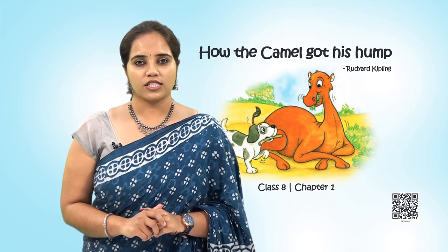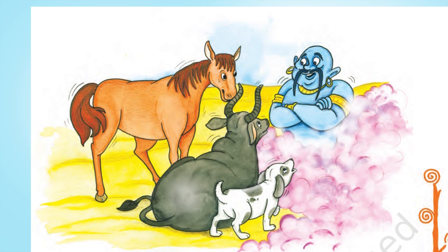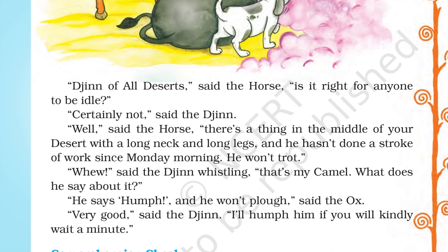Let us now go through the comprehension check questions from part one appearing on your screen. I leave questions one, two, and three for you to refer to the video session I've already done with this text and write your answers yourself. Let us discuss answer number four. The question is: how did the Jinn know the horse was complaining against the camel? Answer: while the other animals were assigned the camel's work due to his laziness, the horse complained against the camel to the Jinn. He described the camel as the animal which lived in the middle of the desert with a long neck and long legs, and had not done a stroke of work since the beginning of the week. This was a clear hint to the Jinn that the horse was referring to the camel.